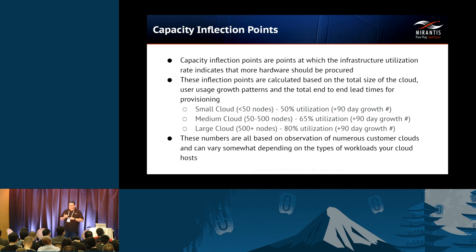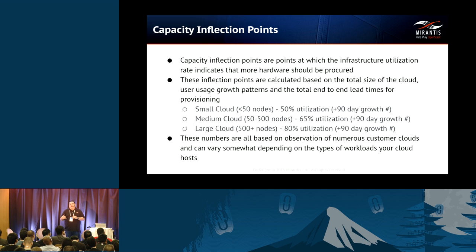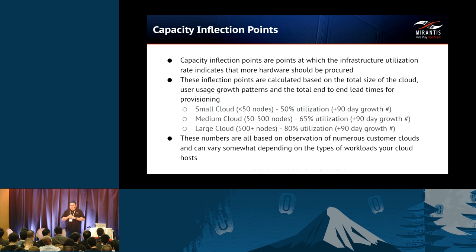We add a 90-day growth number on top — what's been the growth over the last 90 days, and we add that on. Typically that growth is about 50% on a small cloud, so we're basically doubling the hardware or at least adding 50% of the original number — 50% growth, not 100% growth. On a medium cloud, which is 50 to 500 nodes, you're at about 65% utilization — once you hit that number, you trigger the process again.